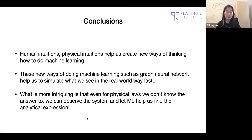Let me conclude here. Human intuitions and physical intuitions help us create new ways of thinking about machine learning. These new ways, such as graph neural nets, help us simulate what we see in the real world way faster. What's more intriguing is that even for physical laws we don't know the answer to, we can observe the system and let ML help us find analytical expressions. Thank you for listening and stay safe.